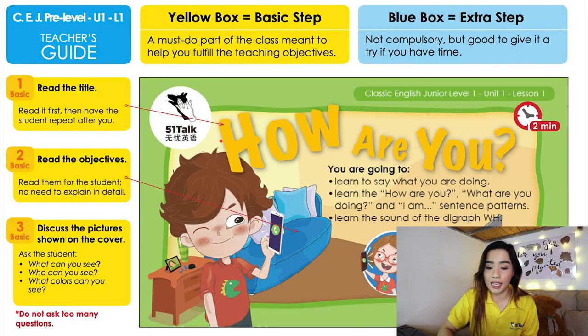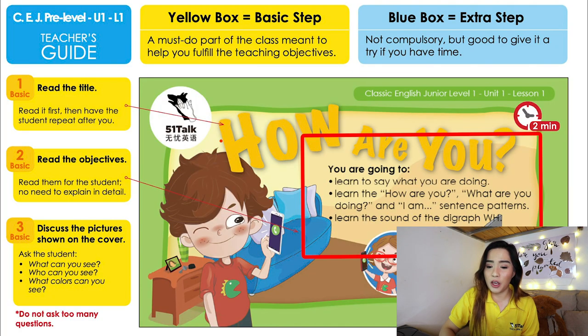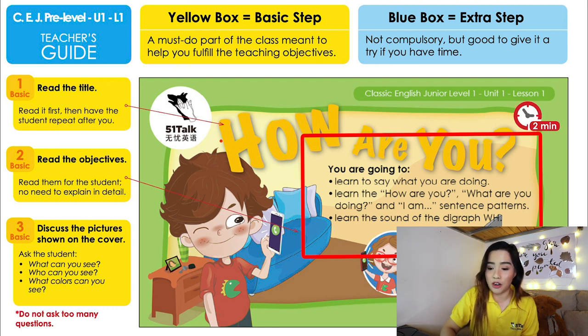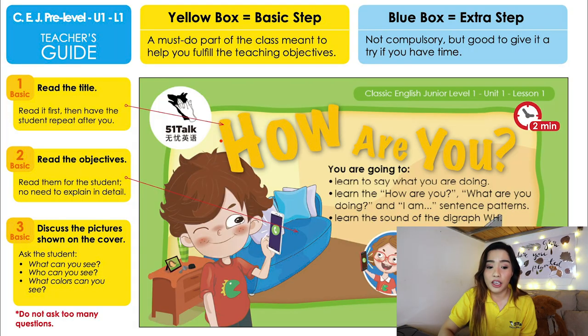I will say, 'Well Bob, let's start the lesson. Today we're going to learn how to say: How are you? What are you doing? And the I am sentence pattern. Not only that, we're going to learn the sound of WH. Sounds good?' Then after he answers — okay or good — I go to step three.